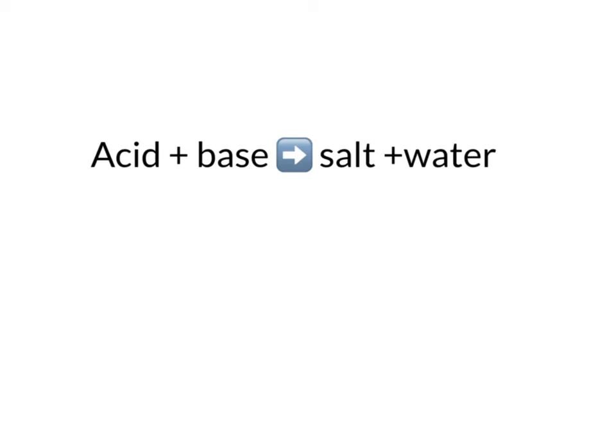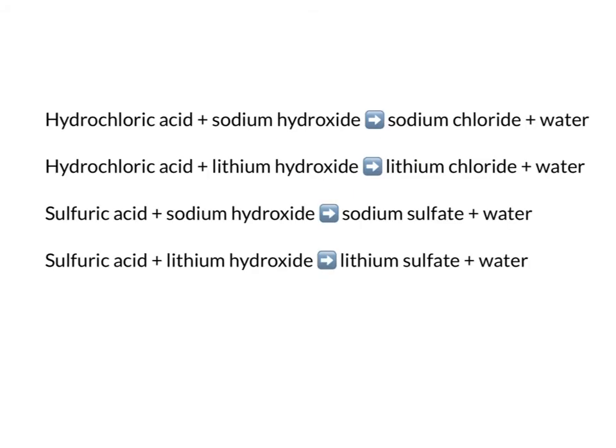What you have to be able to do is use the name of the acid and the base to work out what the name of the salt is going to be. Let's look at some examples. We have sodium chloride, lithium chloride, sodium sulfate, and lithium sulfate.